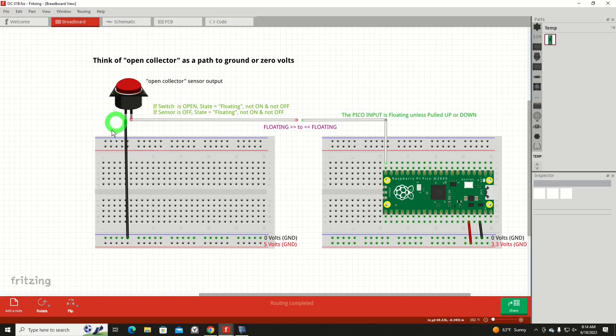If it's just configured as an input, it is floating. It is neither high nor low. The Pico input is floating unless pulled up or down. And over here, our open collector sensor output is floating. So now you got floating connected to floating here in the middle. So you're not really going to be in any state of on or off. It is that random floating state, which is susceptible to radio frequency, electrical noise in a circuit. So how do we deal with that?